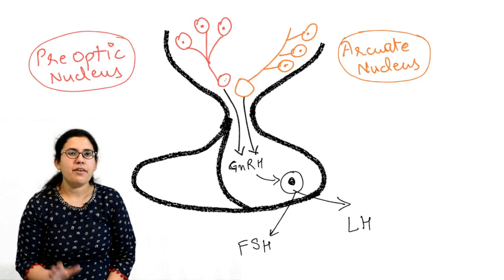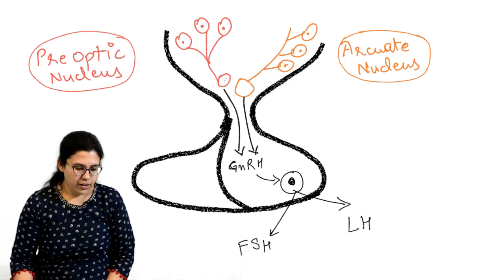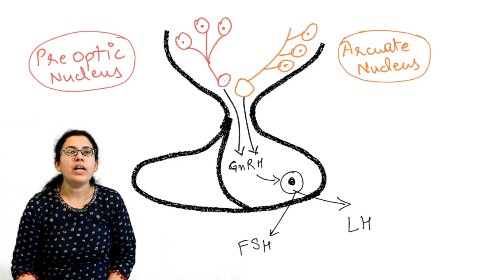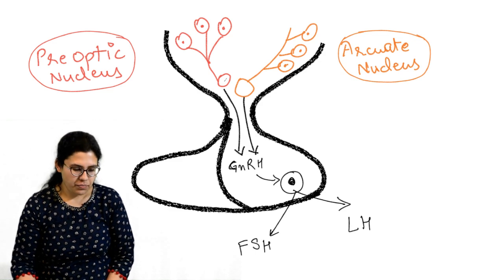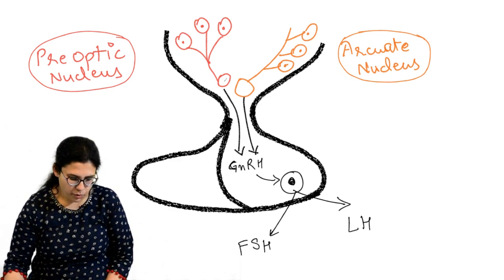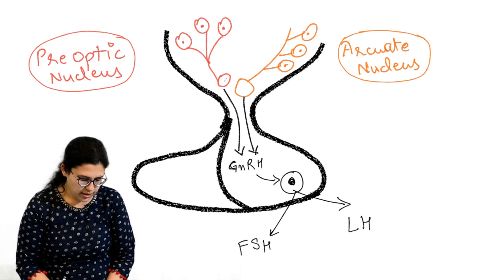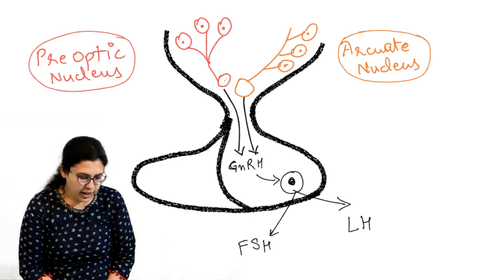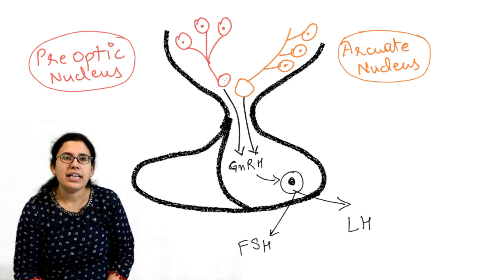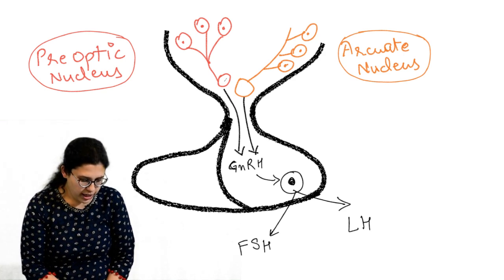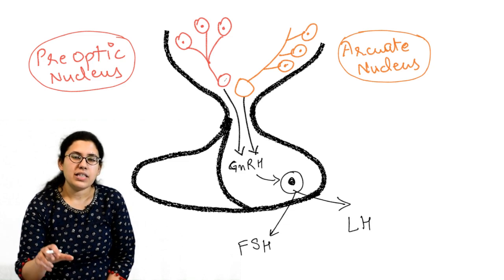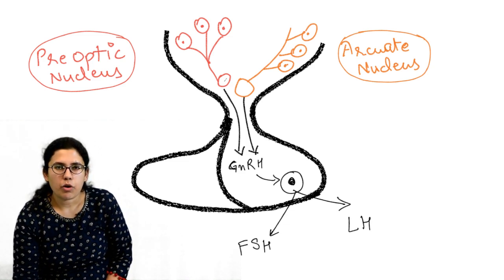Everything begins in the brain. In the hypothalamus there are two types of nuclei: the arcuate nucleus and the pre-optic nucleus. These nuclei release a special hormone called gonadotropin releasing hormone (GnRH). This GnRH is released from the hypothalamus and acts on special cells in the pituitary called gonadotrophs.